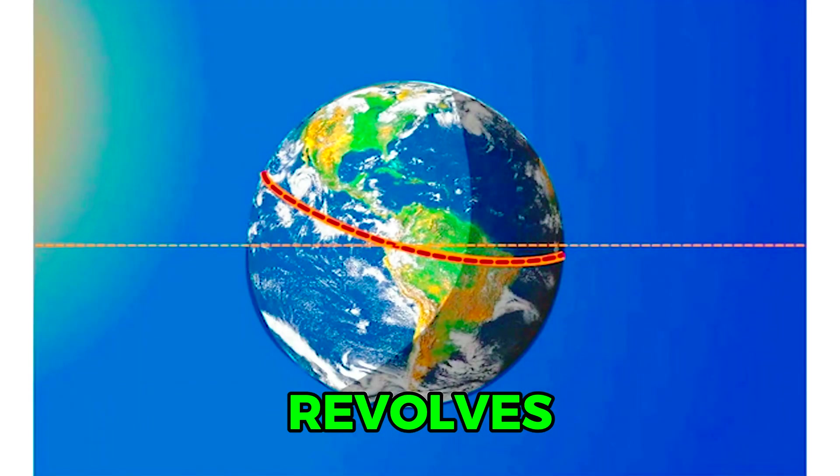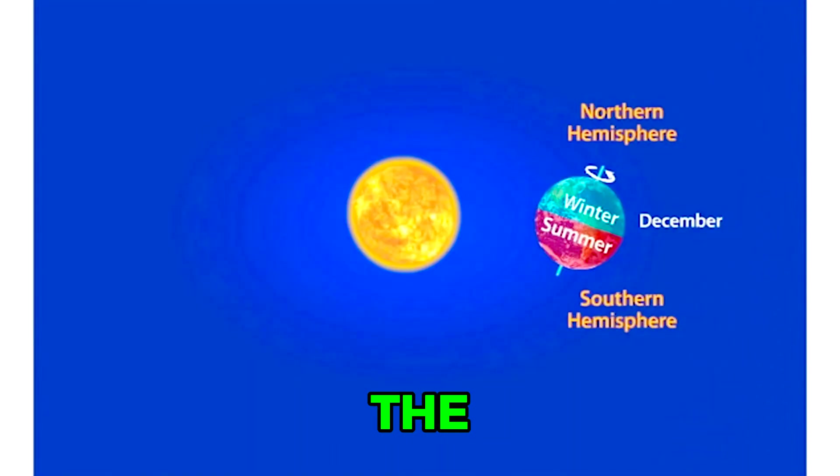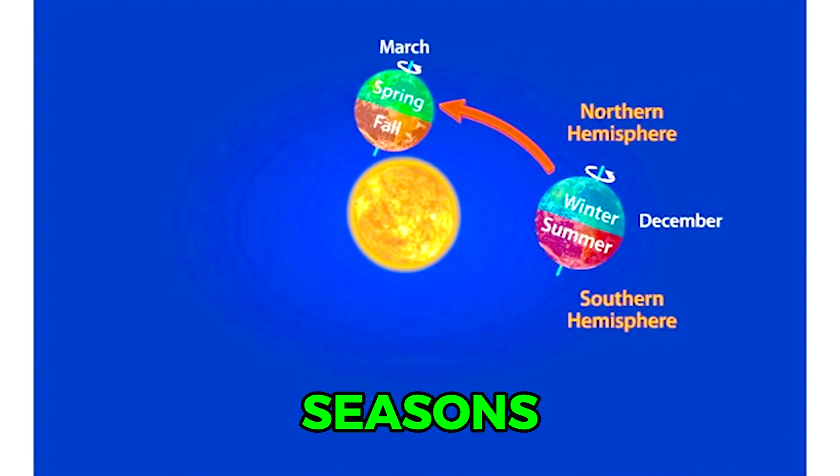As the Earth revolves around the Sun, the planet tilts 23.5 degrees on its axis of rotation. The degree to which various points on the globe are pointing toward or away from the Sun determines the seasons.